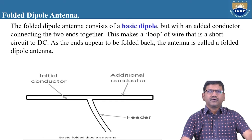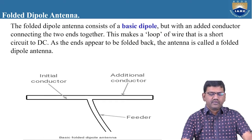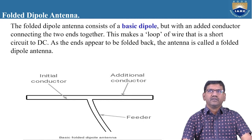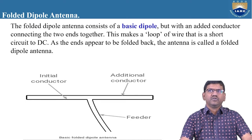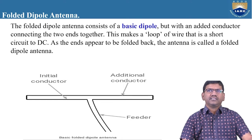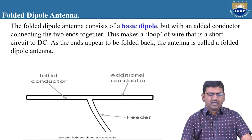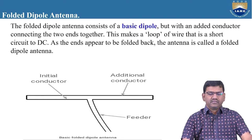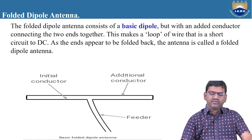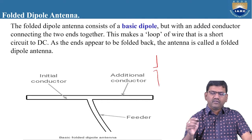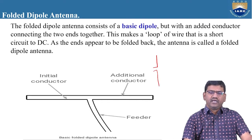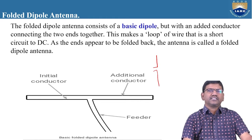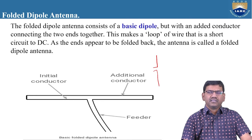The folded dipole antenna consists of a basic dipole but with an added conductor connecting the two ends together. This makes a loop of wire that is a short circuit to DC. As the ends appear to be folded back, the antenna is called the folded dipole antenna. It is basically designed from the basic half-wave dipole antenna.